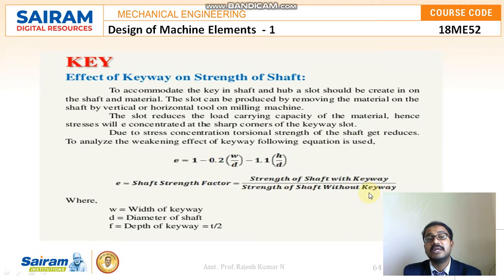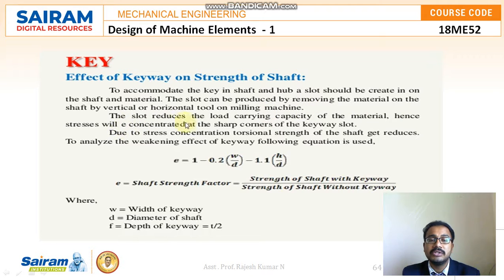Now we discuss how the keyway affects the strength of the shaft. To accommodate the key, a slot must be created in the shaft and hub by removing material using a vertical or horizontal tool on a milling machine. This slot reduces the load-carrying capacity and causes stress concentration at the corners of the key base slot. Due to this stress concentration, the torsional strength of the shaft is reduced. To analyze this weakening effect, the equation used is: E = 1 − 0.2(W/D) − 1.1(H/D).